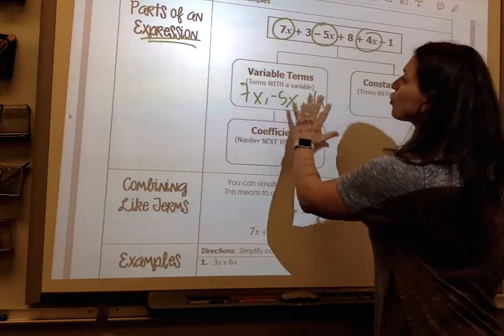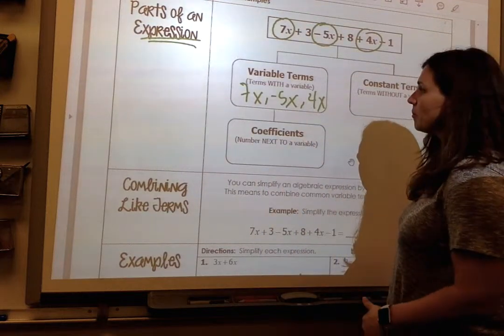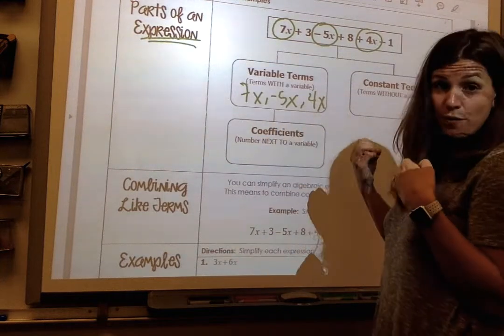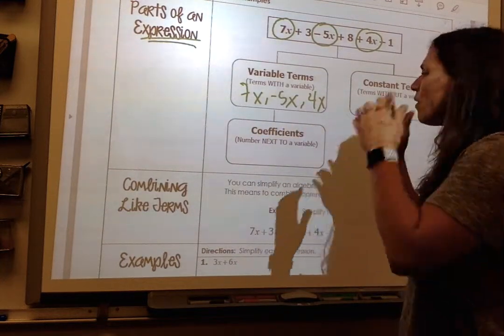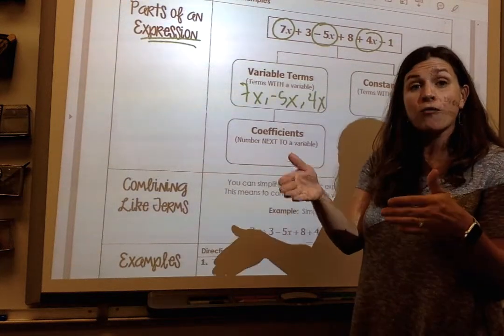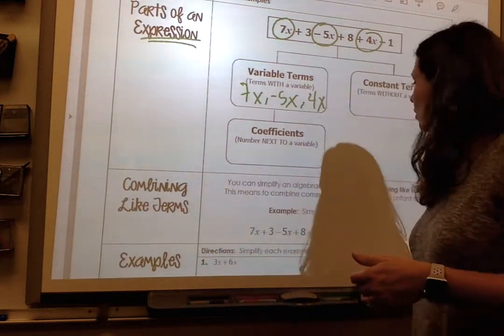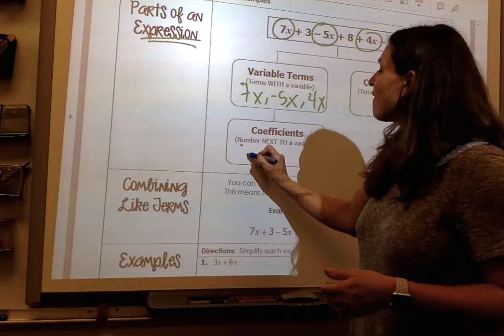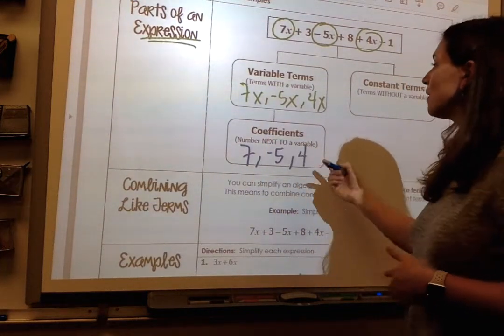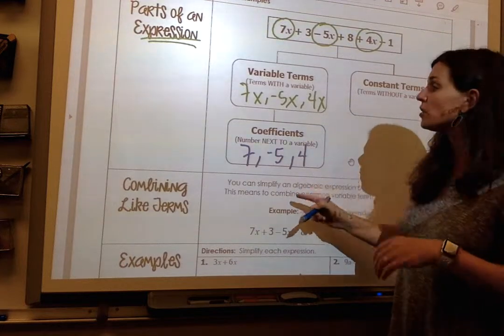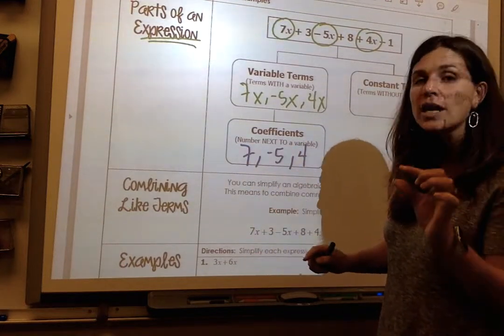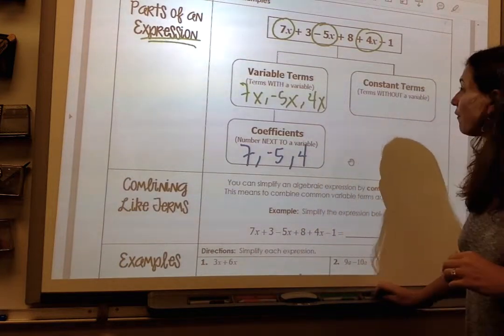If you look at your variable terms, you can even break it down further, and we can pull out coefficients from these variable terms. Coefficient, all that does is it tells me the number in front of the variable term. So it tells me 7, it tells me negative 5, and it tells me 4. You will notice coefficient never has a variable with it. It is just a number.